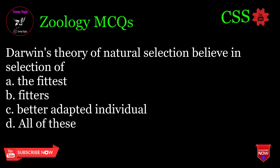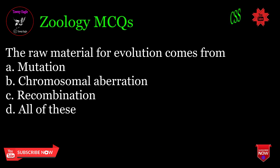Darwin's theory of natural selection believes in selection of: A. The fittest, B. Fitter, C. Better adapted individual, D. All of these. Correct answer: D.